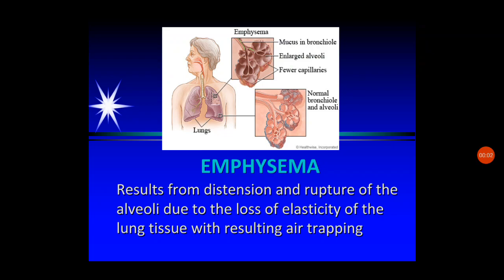Good morning dear students. Now we will discuss about the third topic for today's session, that is emphysema. Emphysema usually results from distention and rupture of the alveoli due to the loss of elasticity of the lung tissue, with the resulting air trapping.